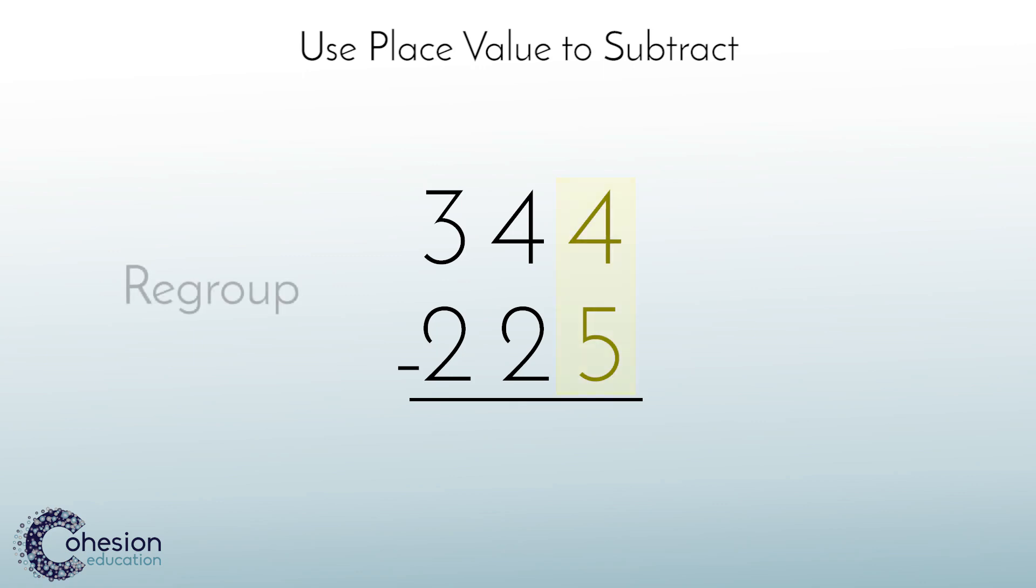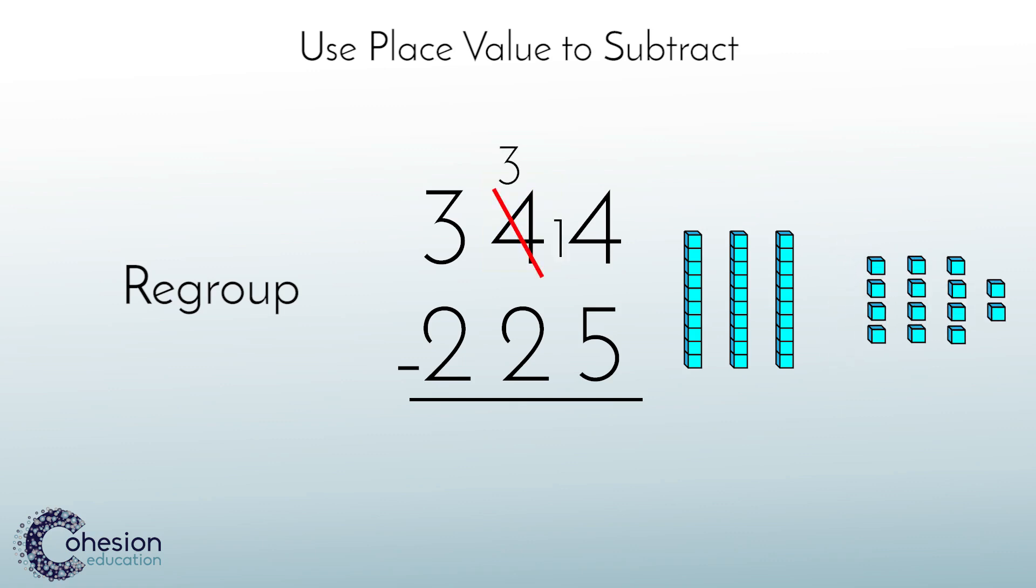Four is less than five, so the student must regroup or borrow one ten from the tens place. So the four tens and four ones now become three tens and fourteen ones. Fourteen minus five equals nine. Next, subtract the tens. Three minus two equals one. And last, subtract the hundreds. Three minus two equals one. So, 344 minus 225 equals 119.